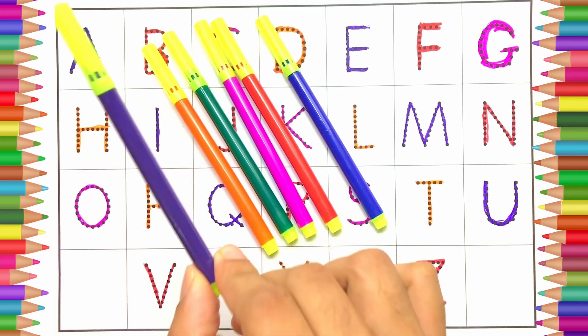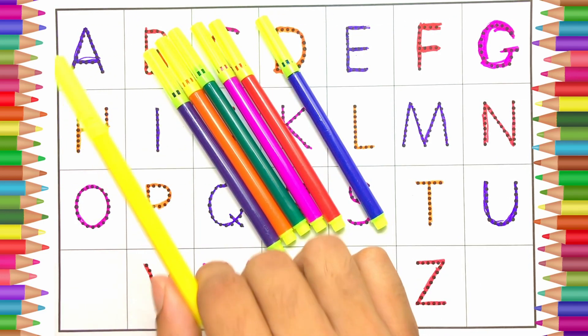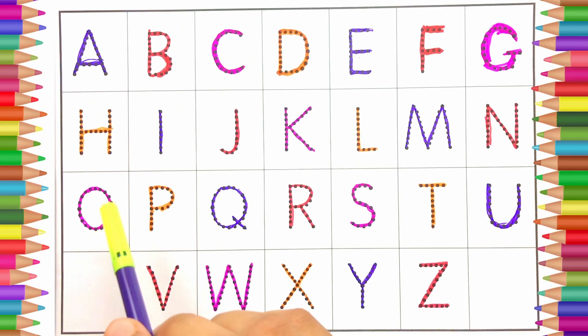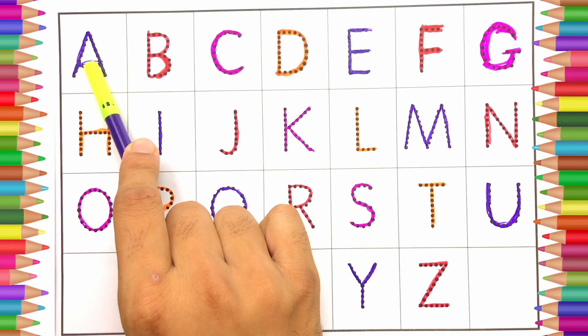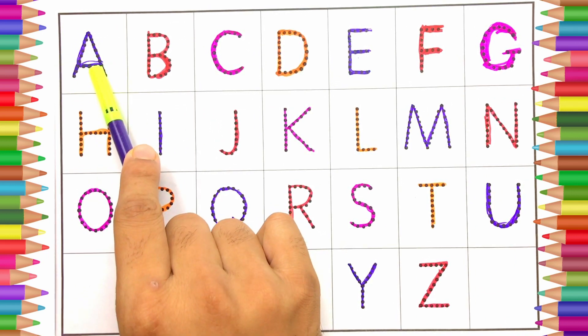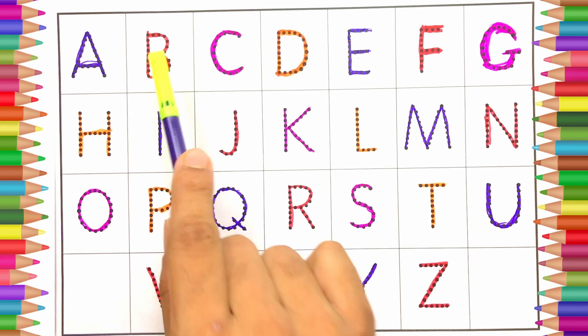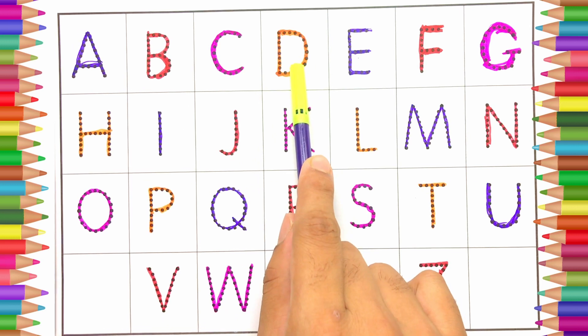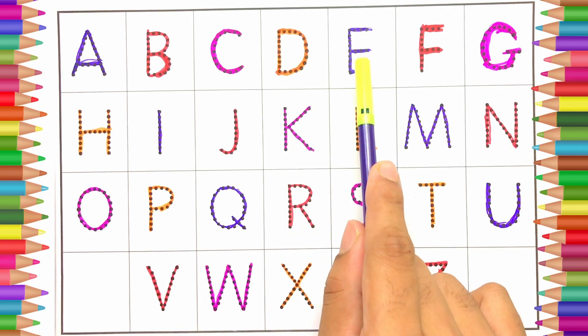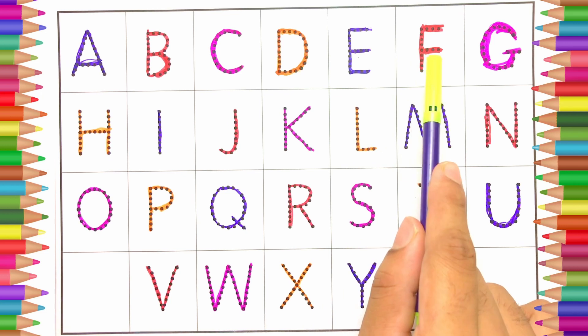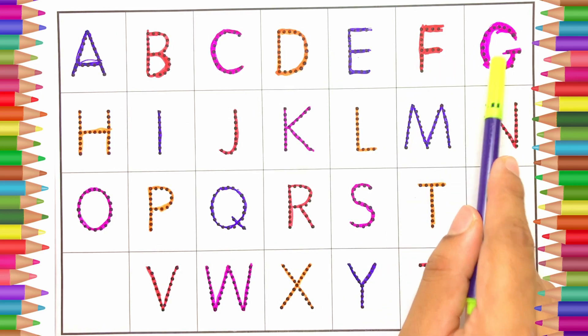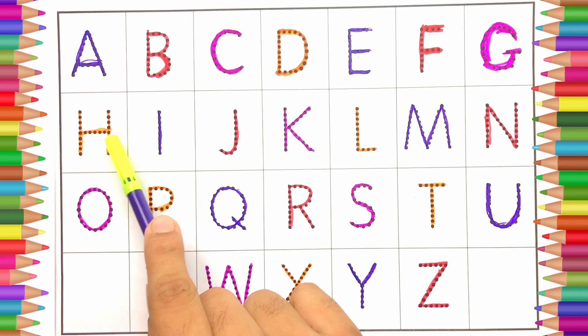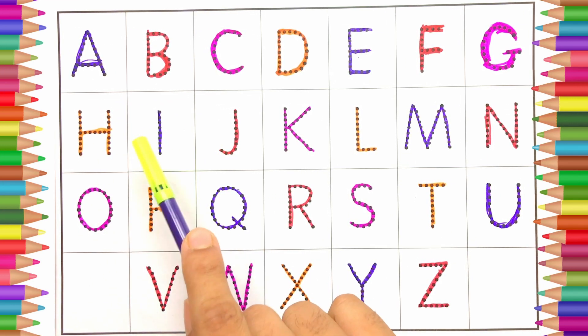Let's learn the alphabet. A, A for apple. B, B for ball. C, C for cat. D, D for dog. E, E for elephant. F, F for fish. G, G for goat. H, H for horse. I, I for ice cream.